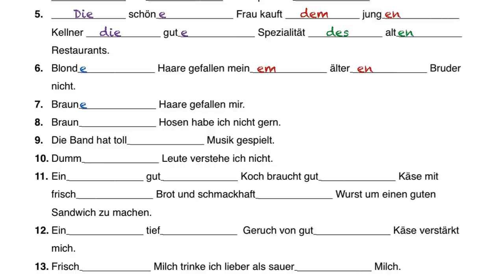Nummer acht: ich habe braune Hosen nicht gern. Ich is the subject; Hosen is the accusative object, plural and non-preceded, so E: braune Hosen — I don't like brown pants. Nummer neun: die Band hat tolle Musik gespielt — this is the same as before but using non-preceded adjective ending in the past tense. Tolle Musik is accusative non-preceded feminine, so E. Nummer zehn: dumme Leute verstehe ich nicht — dumb people I don't understand. Leute is plural non-preceded direct object, so E: dumme.